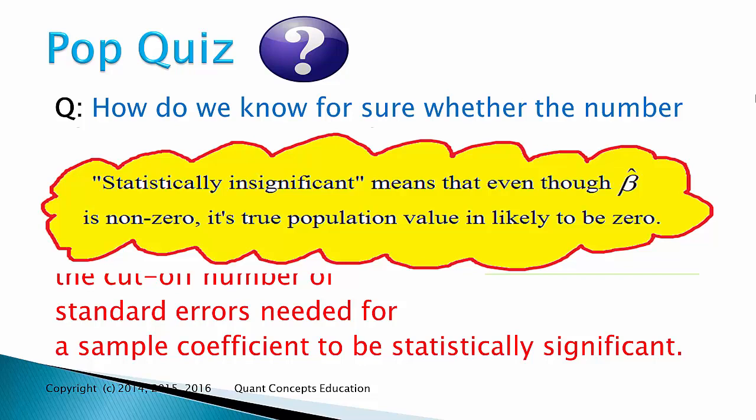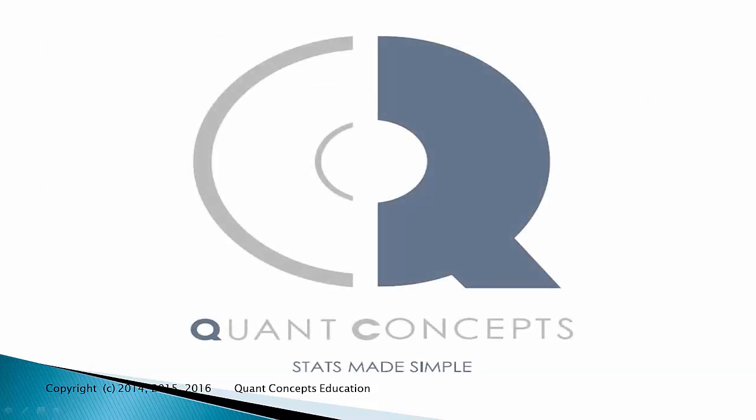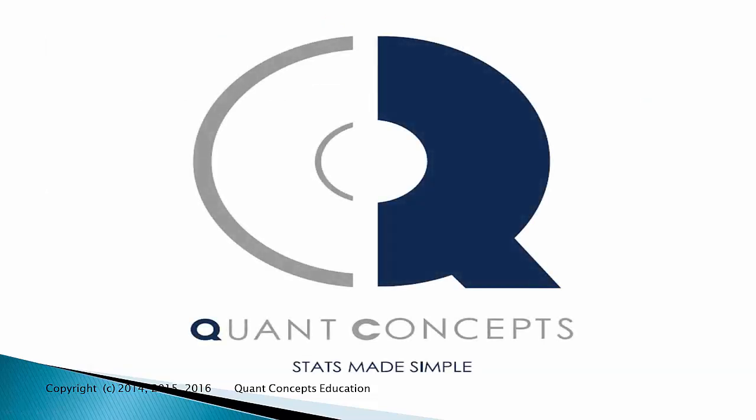Statistically insignificant means that even though beta hat is non-zero, its true population value is likely to be 0. Thank you for watching our tutorial today. We hope you found it helpful.